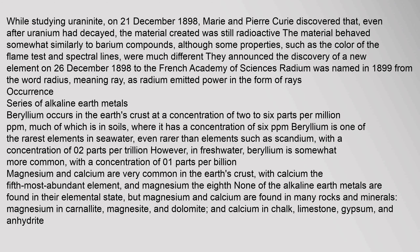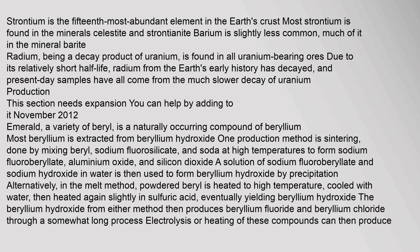Beryllium occurs in the earth's crust at a concentration of two to six parts per million (ppm), with a concentration of six ppm in soils. It is one of the rarest elements in seawater, with a concentration of 0.2 parts per trillion, though in freshwater it is somewhat more common at 0.1 parts per billion. Magnesium and calcium are very common in the earth's crust — calcium is the fifth most abundant element and magnesium the eighth. None of the alkaline earth metals are found in their elemental state, but magnesium and calcium are found in many rocks and minerals. Strontium is the 15th most abundant element in the crust, barium is slightly less common, and radium, a decay product of uranium, is found in all uranium-bearing ores.